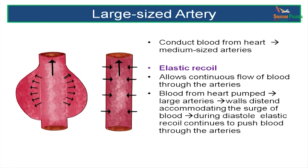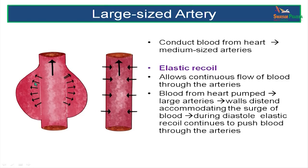These large-sized arteries are close to the heart and during systole, blood is pushed into these vessels with high pressures. To accommodate these pressures, the lumen of the artery increases as the walls bulge. As diastole takes place and pressures in the heart drop, the lumen comes back to normal size, and this maintains the steady flow of blood through the conducting arteries.